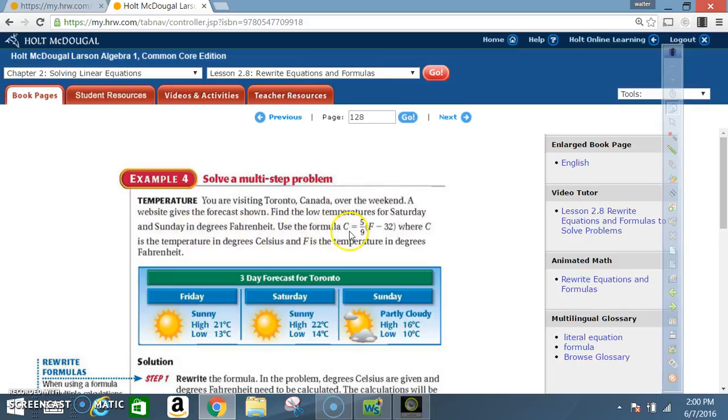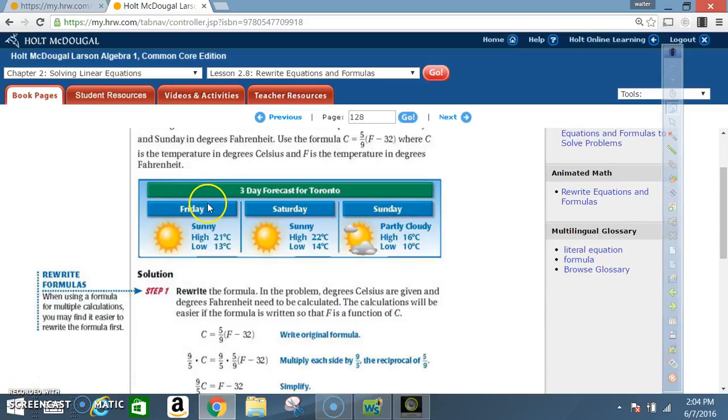Use the formula C equals 5 divided by 9 times F minus 32, where C is the temperature in degrees Celsius and F is the temperature in degrees Fahrenheit. Pay close attention to the table and notice that all temperatures are given in Celsius. They want us to convert the Celsius degrees to Fahrenheit.